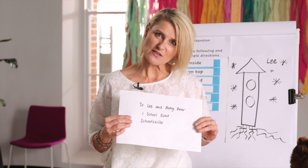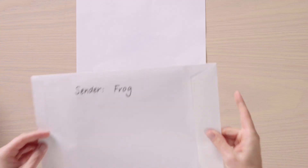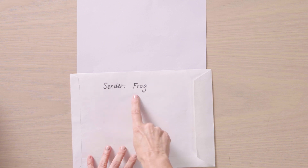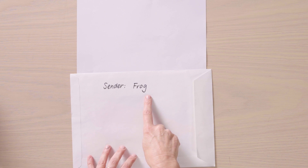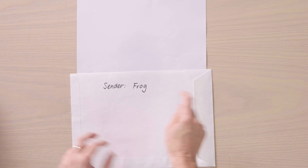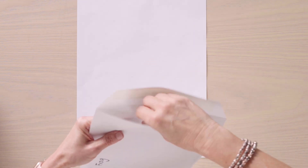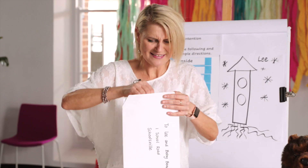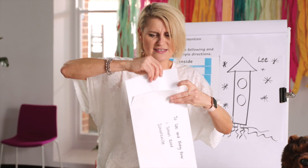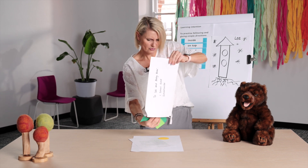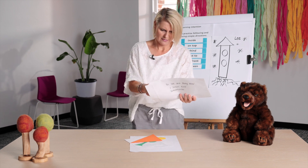I wonder what's on the back of the envelope. Let's flip it over and have a look. It says on the back, Sender: Frog. It's from our friend Frog — how exciting! I wonder what's inside. Should we open it up and have a look? Feels like there's lots of stuff in here. There's a letter and there's lots of bits. Let's make sure we get everything from inside the envelope.